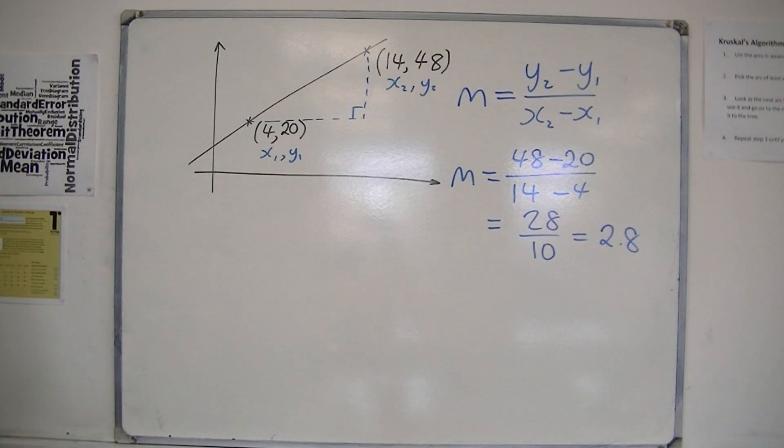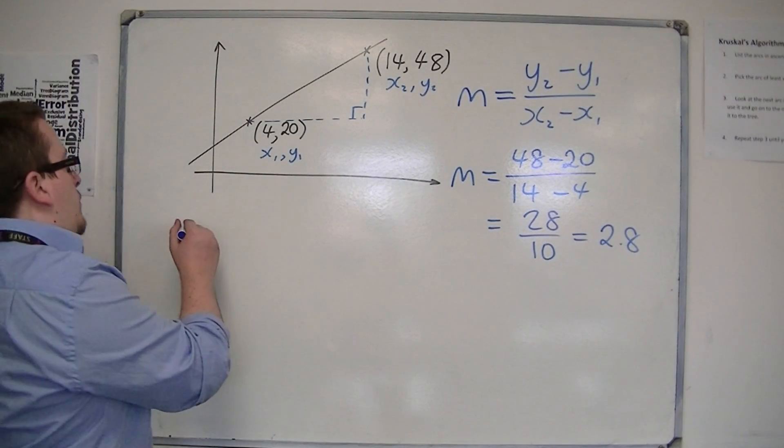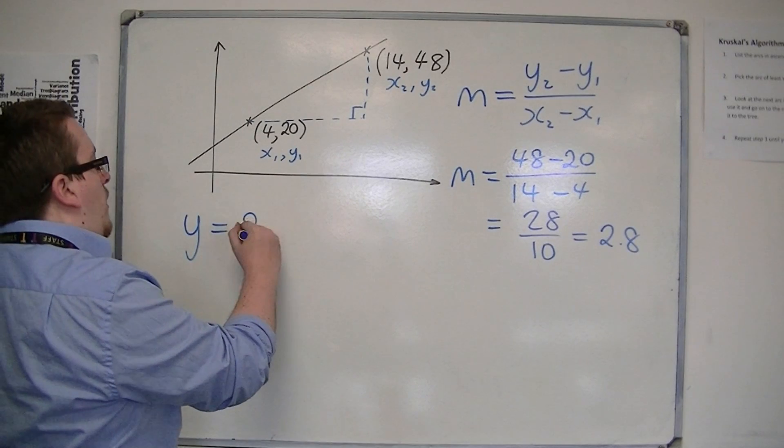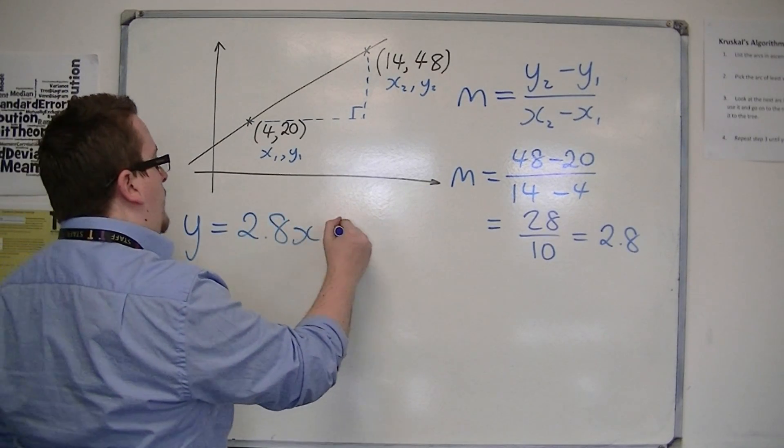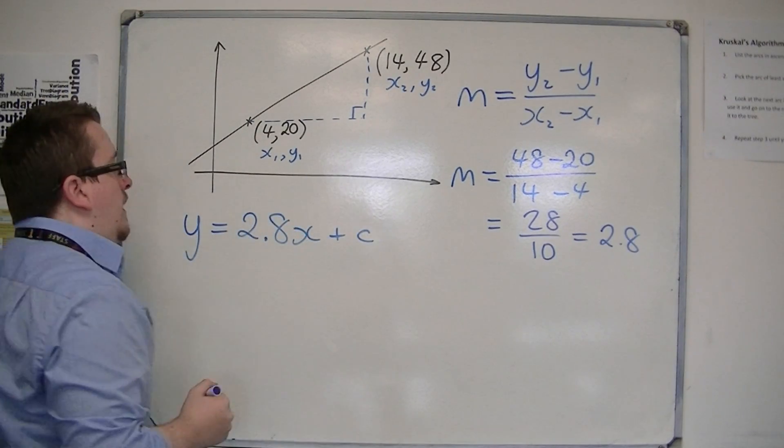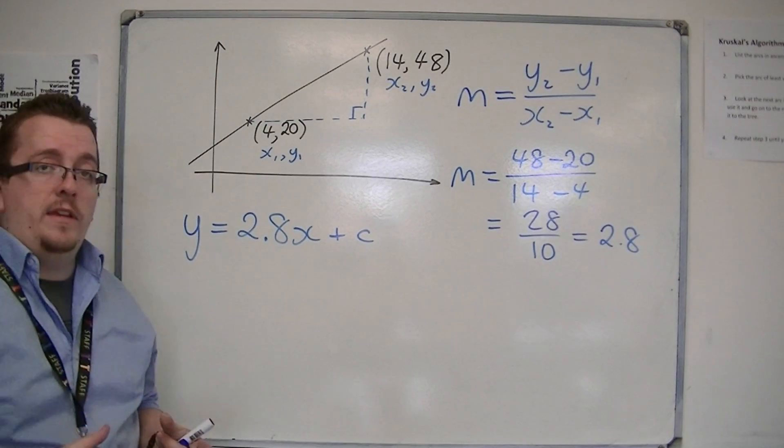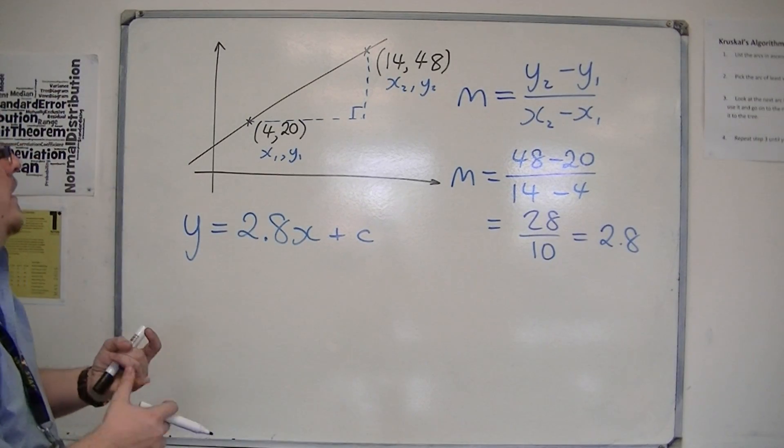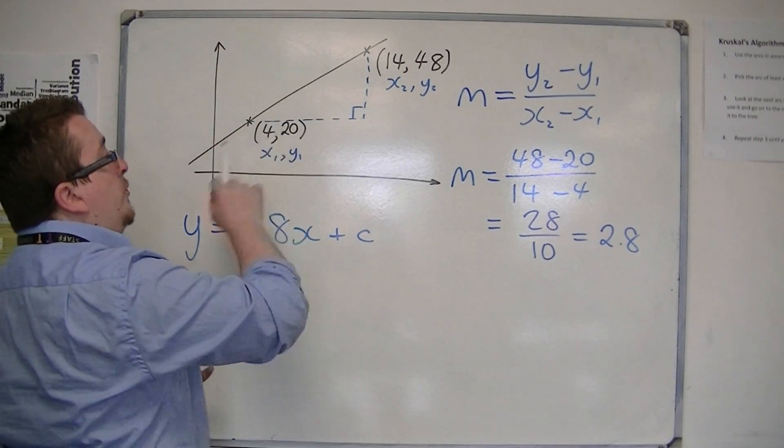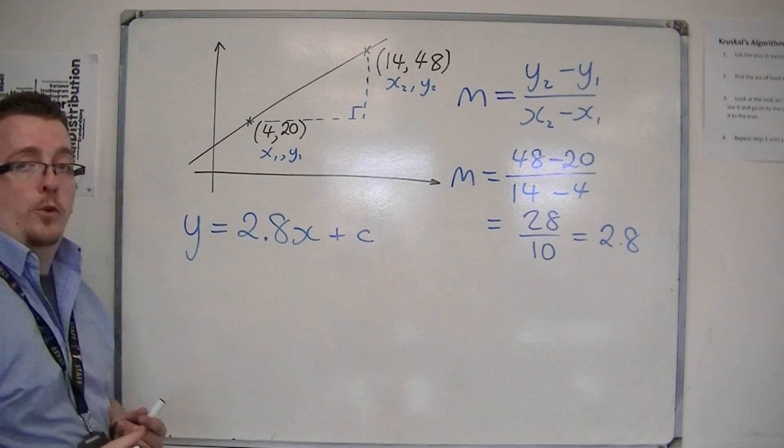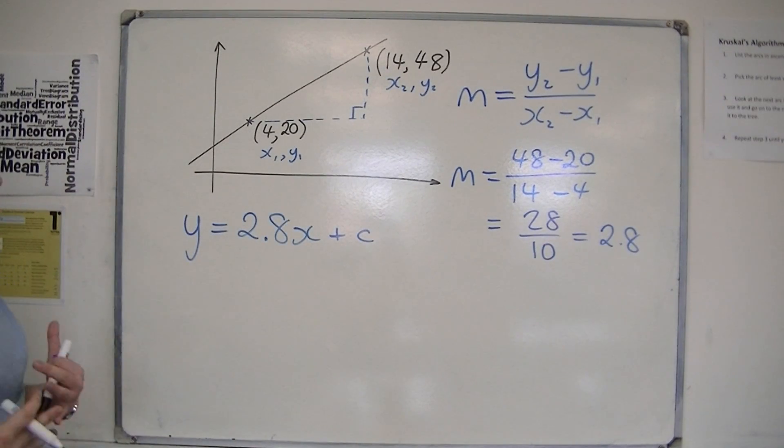So that's the gradient of the line. We currently have an equation that is y equals 2.8x plus c, and I want to find the value of c. To do that, you can either substitute in the coordinates (4,20) or the coordinates (14,48). It doesn't matter which.